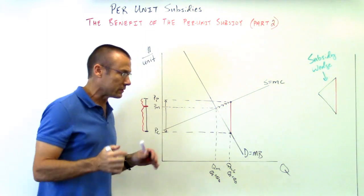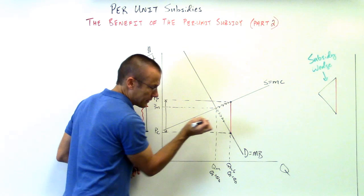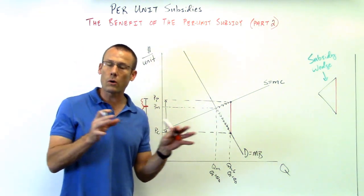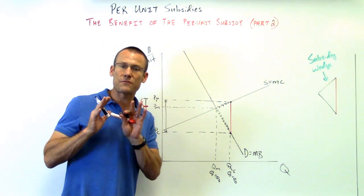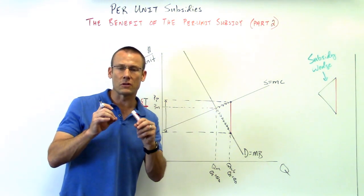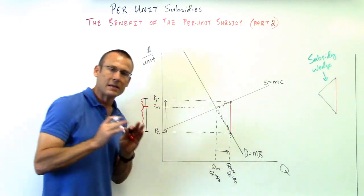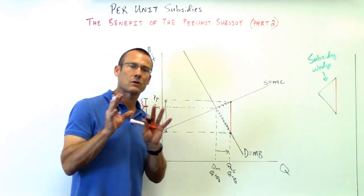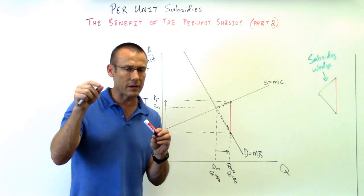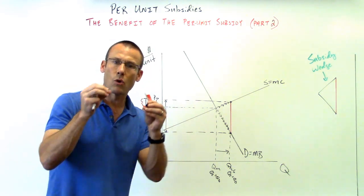Why does the consumer get the far larger benefit? Because they were far more inelastic. PP — price producer — is going up by that vertical distance. Moving along the supply curve, they're far more elastic, so as price goes up, quantity supplied increases at a fairly good rate. On the demand side, as price goes down for the consumer, quantity demanded is moving right but at a much slower pace. Quantity demanded is not changing as fast as quantity supplied in relation to price. The price has to change a lot more for the demander to get their quantity demanded to increase by the same amount as quantity supplied. Hence the bigger benefit of the subsidy goes to the market participant that is more inelastic.